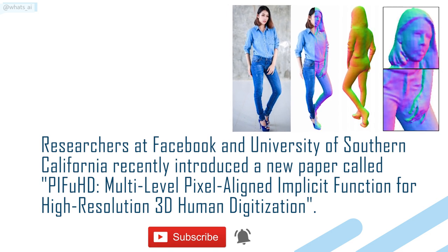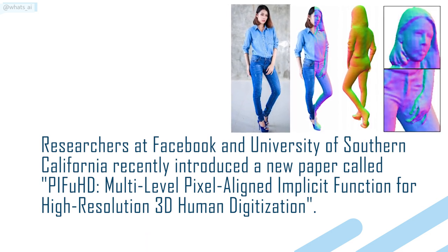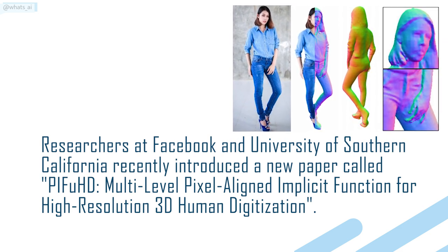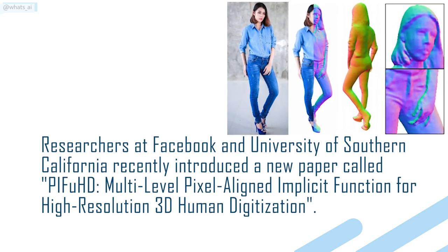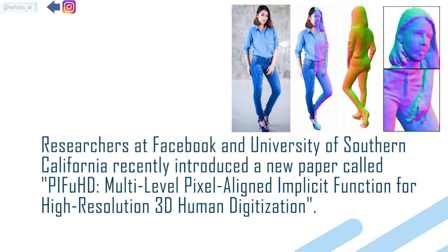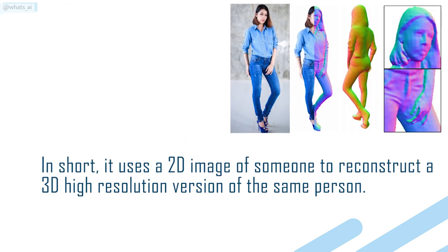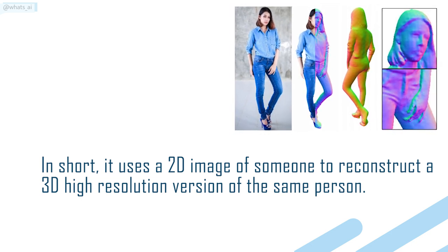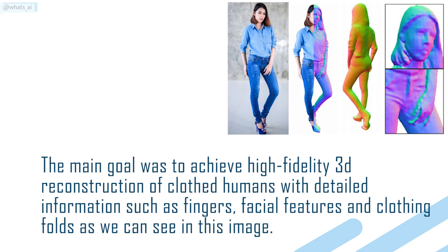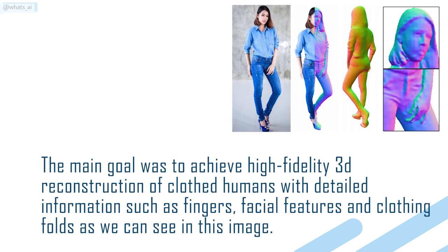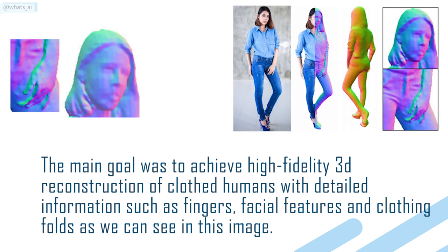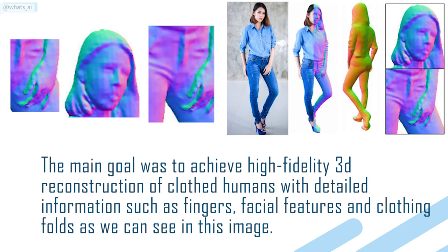Researchers at Facebook and University of Southern California recently introduced a new paper called PIFuHD — Multi-Level Pixel Aligned Implicit Function for High-Resolution 3D Human Digitization. In short, it uses a 2D image of someone to reconstruct a 3D high-resolution version of the same person. The main goal was to achieve a high-fidelity 3D reconstruction of clothed humans with detailed information such as fingers, facial features, and clothing folds, as you can see in this image.